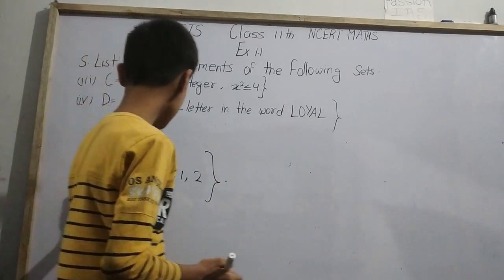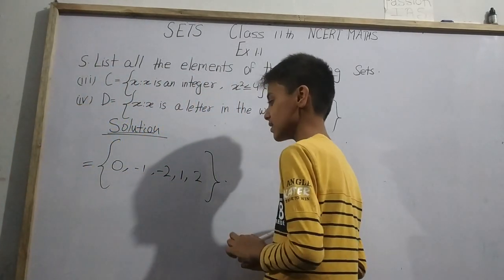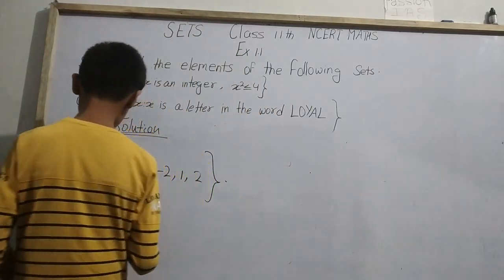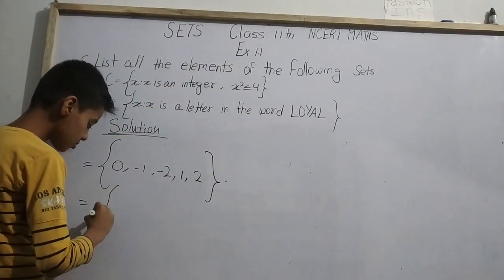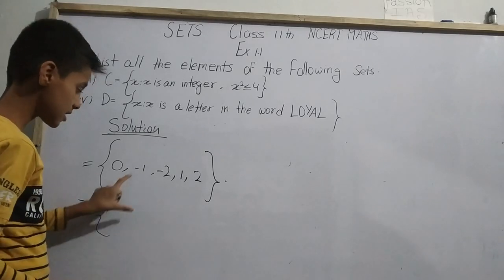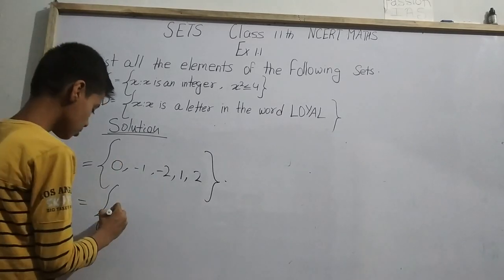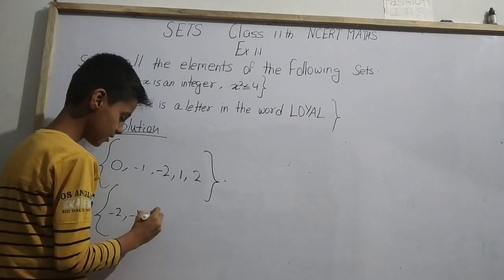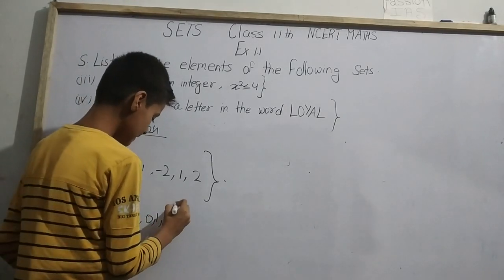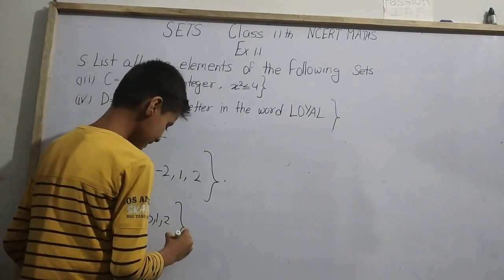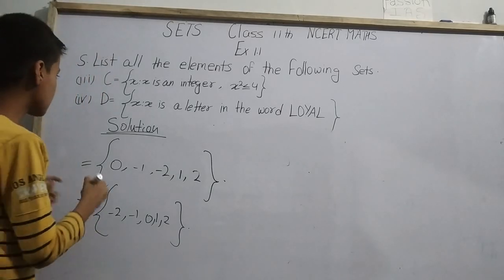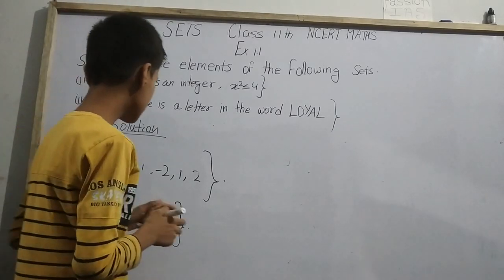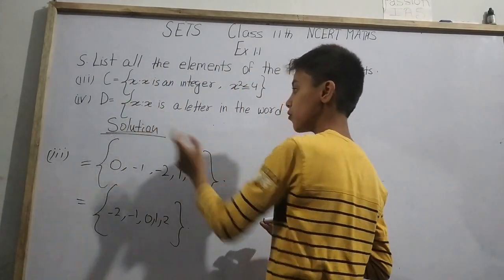The elements found are 0, -1, -2, 1, and 2. Now we arrange them in ascending order. The answer for Question 3 is C = {-2, -1, 0, 1, 2}.